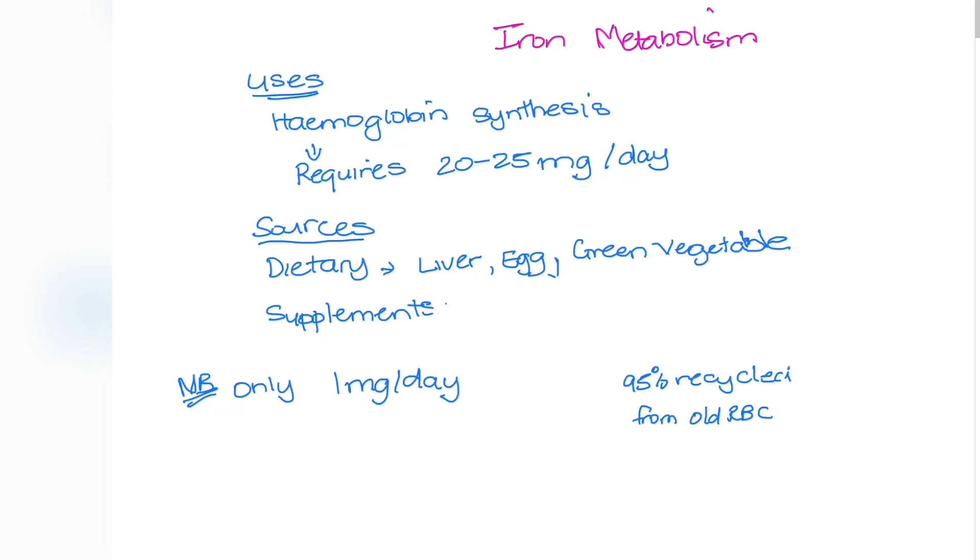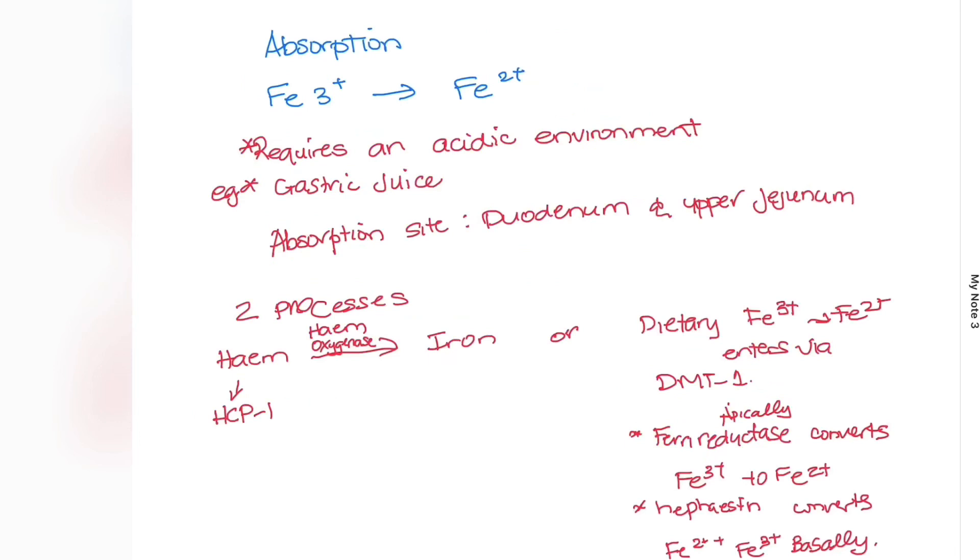Now let's look at the absorption of iron. Iron when it enters your body through diet is in the ferric state, or the Fe3+ state. However, we need to get iron in the Fe2+ state in order for it to be absorbed. For this, gastric juice is very important in the reduction of iron, and therefore an acidic environment is required for this process.